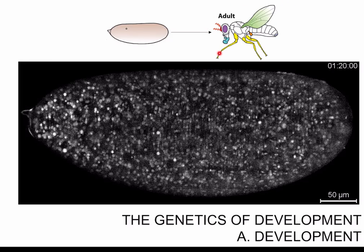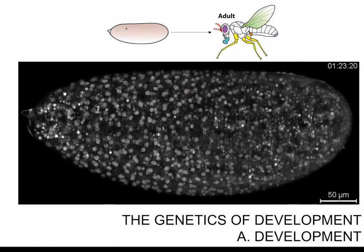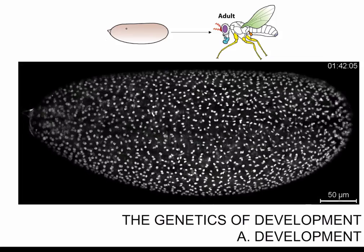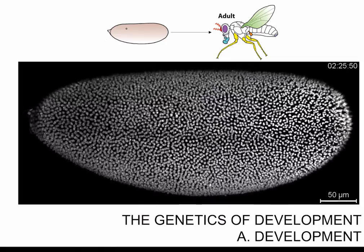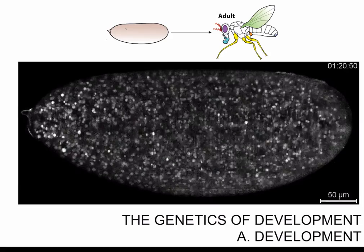The process by which a single cell zygote undergoes mitosis and then the cells pattern themselves into an individual that has organs and appendages is called development. In this video we see the Drosophila embryo during the first 3 hours of development, and we can see that these bright glowing dots, which are the nuclei, are undergoing synchronous cell divisions and increasing in their number.